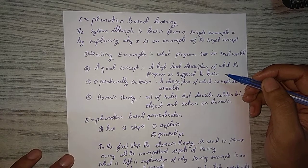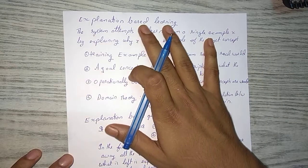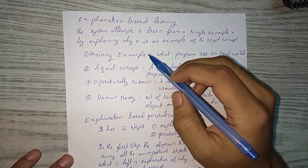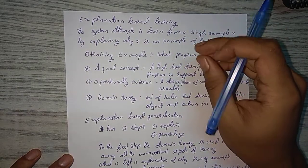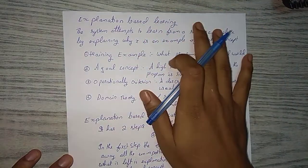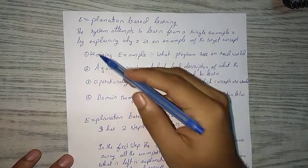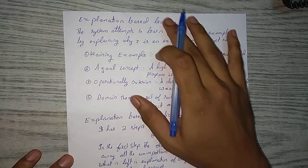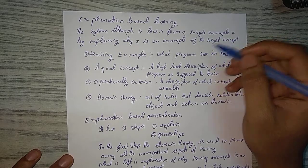Welcome to this video where we will learn about explanation-based learning. We have previously learned about rote learning, learning by advice, learning by example, and learning by problem solving. Explanation-based learning is the next method. In this method, the system attempts to learn from a single example X by explaining why X is an example of the target concept.